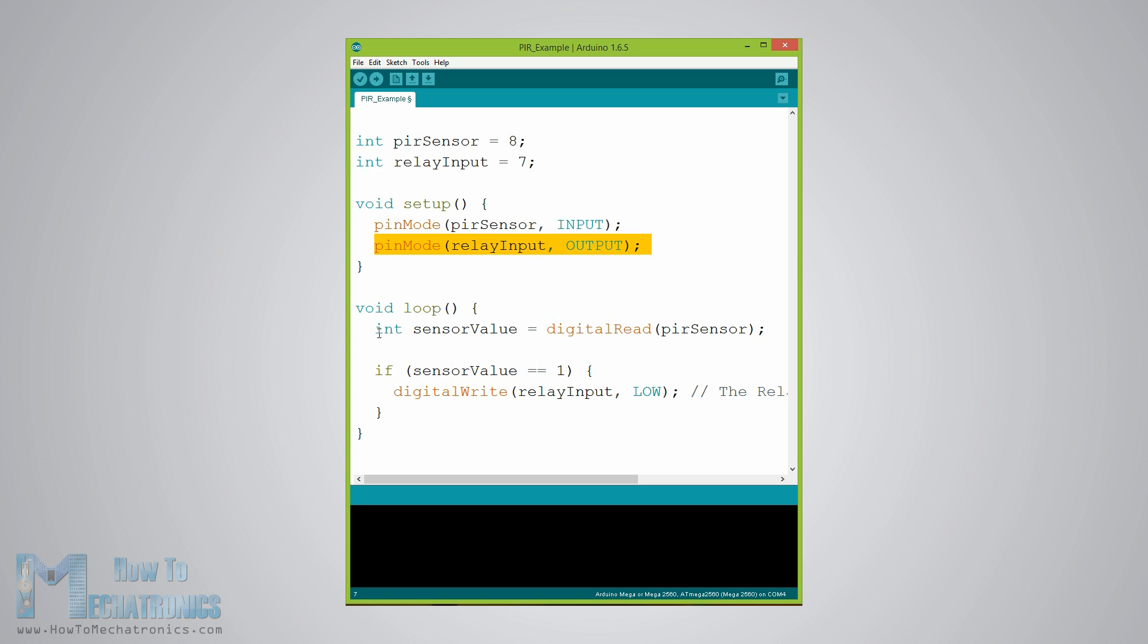Using the digital read function, we will read the output of the sensor and if it's high or if an object is detected, it will activate the relay. For activating the relay module, we will send a logic low as the relay input pin works inversely.